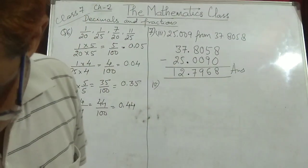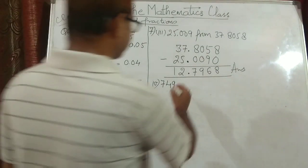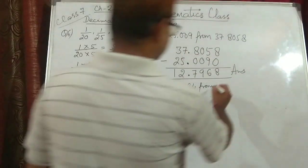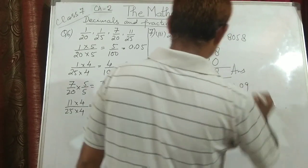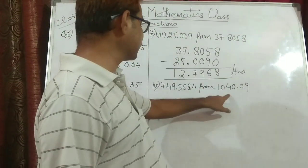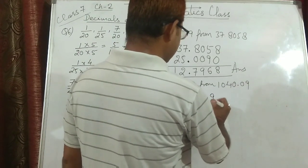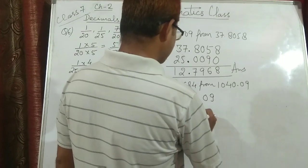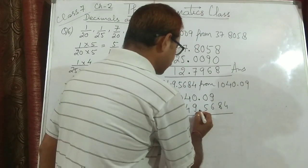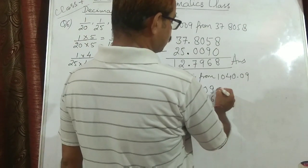The 4th part is: subtract 749.5684 from 1040.09. Here there are only 2 decimal places in 1040.09 and 4 decimal places in 749.5684. So 1040.09 comes on top and 749.5684 comes below. The decimal point must be aligned. Where nothing is there, we assume it is 0.